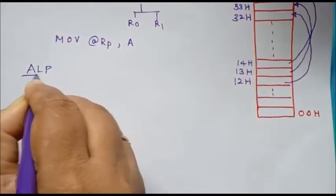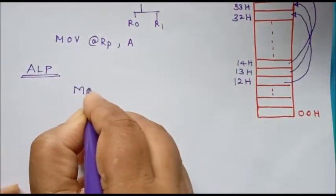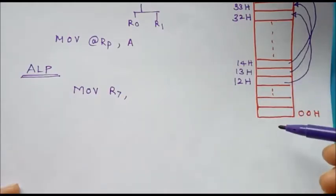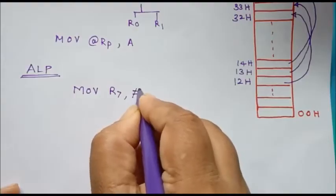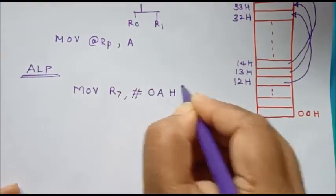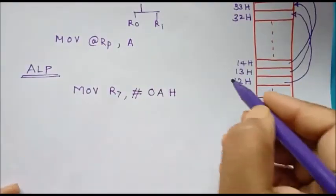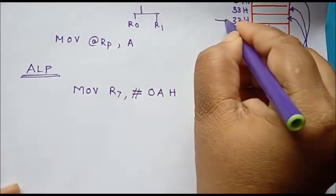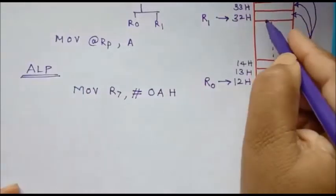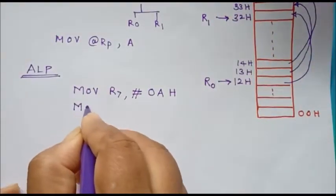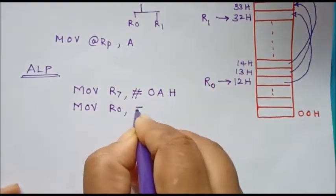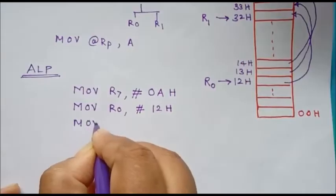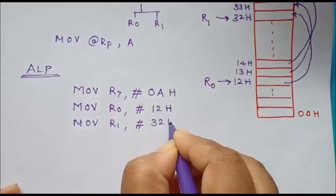Now we will write the assembly language program. First, we initialize the counter. Register R7 will be used as a counter register. Since we want to repeat the read-and-write process 10 times, we initialize R7 with value 0AH, which is 10 in hex. Next, register R0 will be used as a pointer to the source memory location, so R0 is loaded with 12H — the starting source address — and R1 is loaded with 32H, the starting destination address.